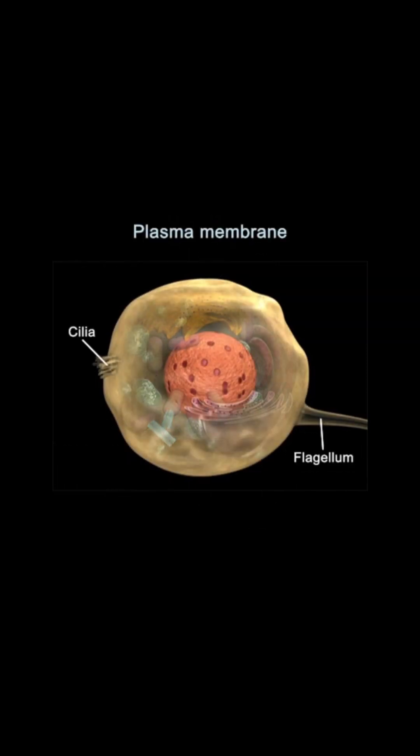The cilia and flagellum are located in the cell membrane. The cilia are short, hair-like projections on the outer surface of the cell that move substances across the surface of the cell in a wave-like motion. A flagellum is similar to cilia, but is thicker, longer, and singular in number. It also helps to move the cell. The tail of a sperm is an example of a flagellum.